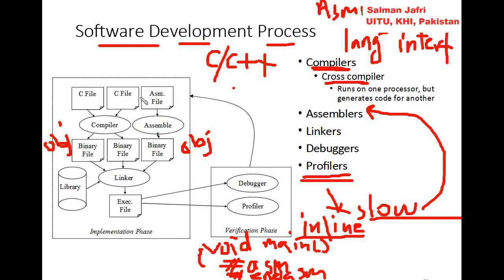The inline assembly approach is suitable when a large section of code needs to be interfaced with the C language program. Nevertheless, we can also use it for complex assembly coding, but generally we use it for quick and fast interfacing, and for more extensive assembly code we would use the first approach — the separate module approach.